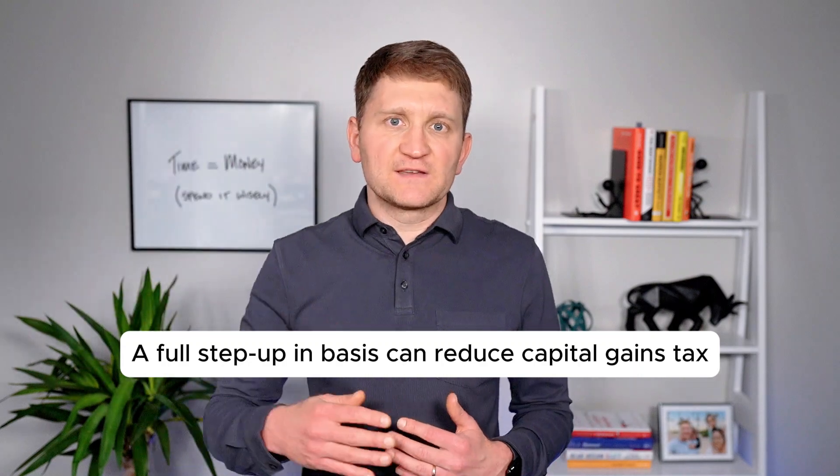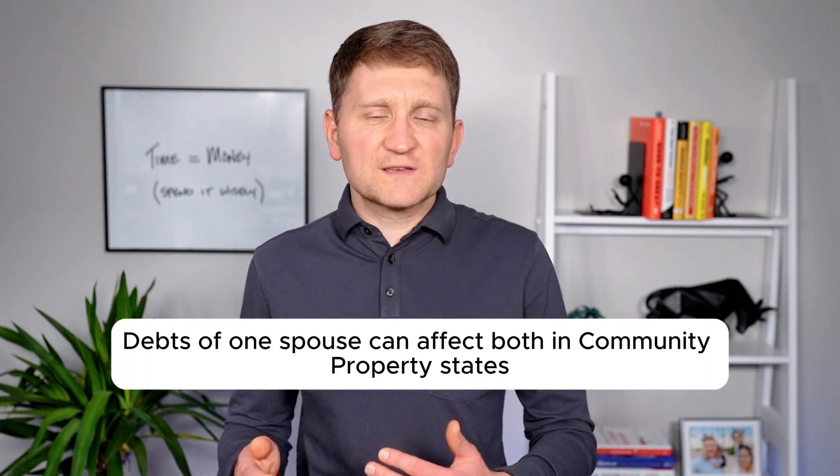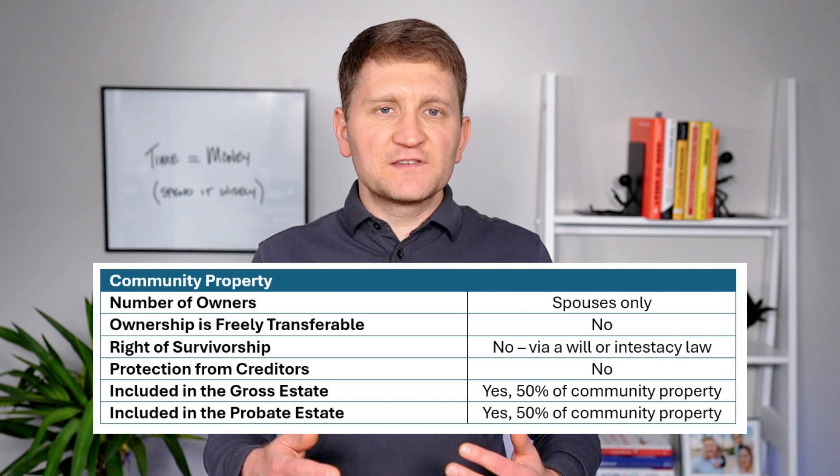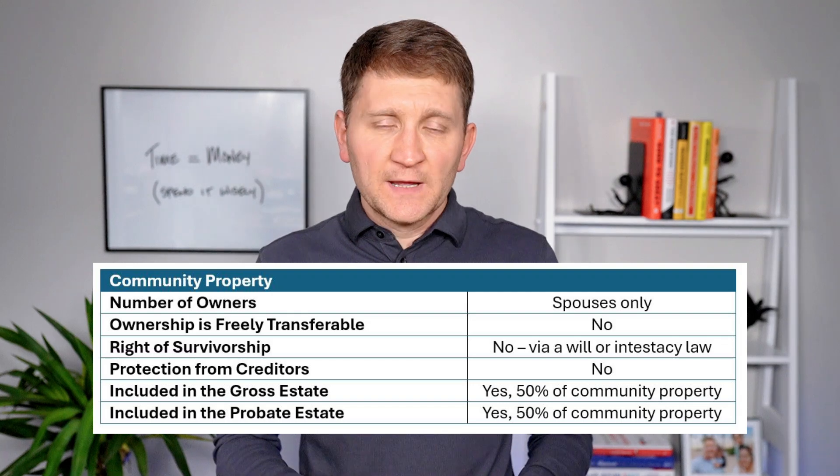Community property offers unique tax advantages. When one spouse passes, the survivor receives a full step-up in basis, potentially reducing future capital gains taxes. However, in some states the deceased spouse's 50% share may go through probate if there is no automatic right of survivorship. For estate tax purposes, each spouse's 50% share is included in their estate. Community property doesn't offer creditor protection, so debts owed by one spouse can affect both. If you move from a community property state to a common law state, you can separate community property by gifting it to your spouse, utilizing the unlimited marital deduction to avoid gift taxes. Conversely, property acquired before relocating to a community property state generally retains its separate status.